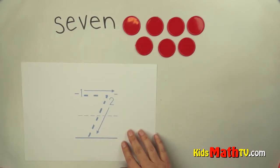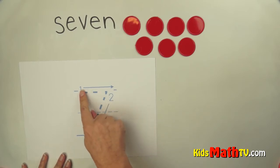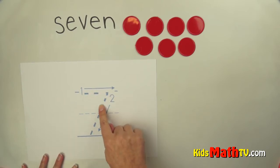To write the number seven we have two strokes. We go across and then we slide down. Across and slide down. Seven. Seven.